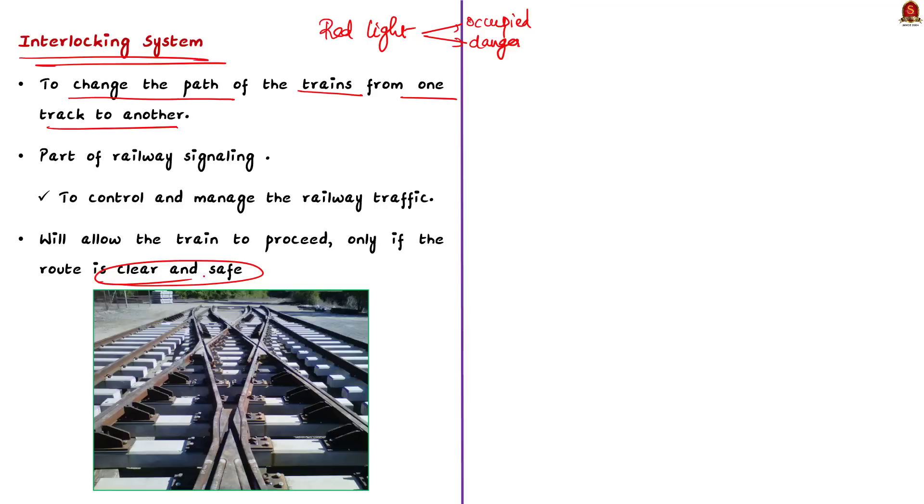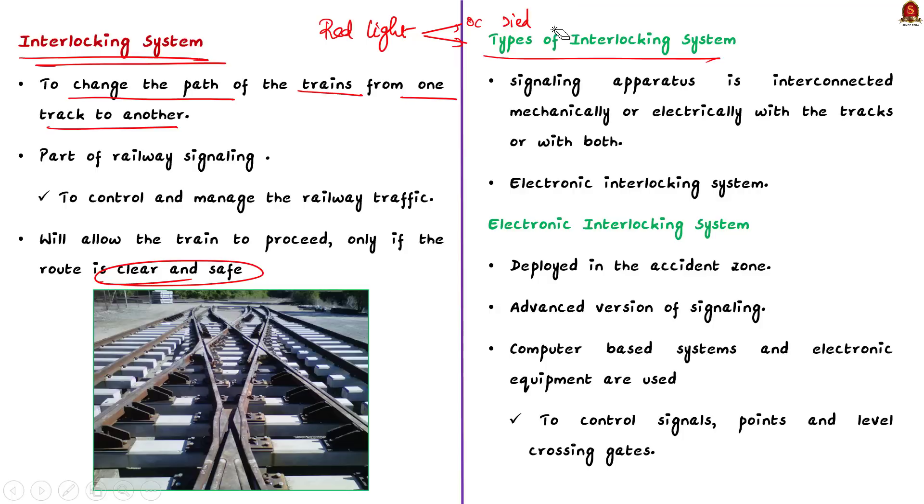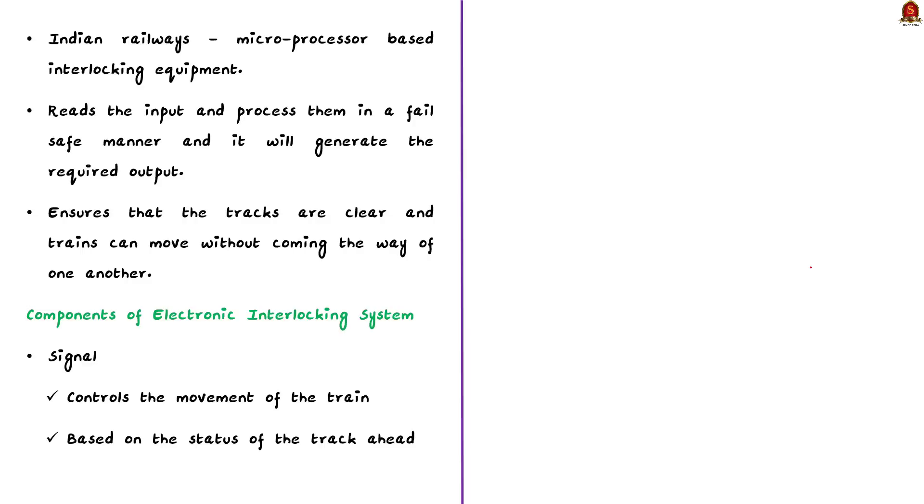Know that there are two types of interlocking systems. The first type is the mechanical or electrical interlocking system. In this system, the signaling apparatus is connected mechanically or electrically to the tracks or sometimes both. This interconnection ensures that the signals and track switches are coordinated properly to guide the train safely. The second type is the electronic interlocking system. This is an advanced version of signaling that utilizes computer-based systems and electronic equipment. It is often deployed in accident-prone areas. In this system, microprocessor-based interlocking equipment is used. It reads input signals and processes them in a fail-safe manner to generate the required output. The electronic interlocking system is managed using a software and electronic component, thus making it more efficient and reliable.